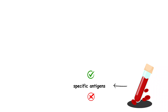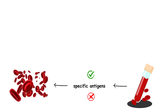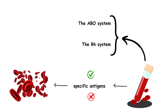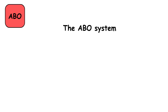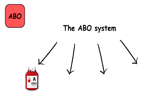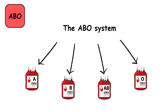Blood types are determined by the presence or absence of specific antigens on the surface of red blood cells. There are two main systems for blood types: the ABO system and the RH system. The ABO system includes four blood types: A, B, AB, and O.